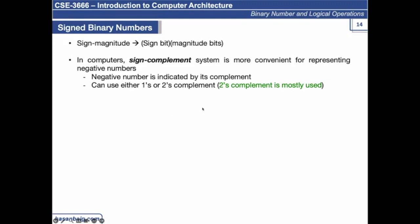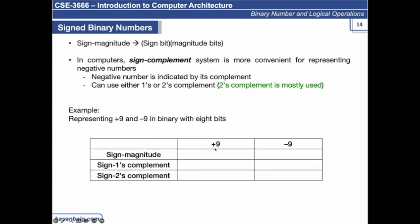So in computer sign complement system is more convenient for representing negative numbers. Here negative number is indicated by its complement. We have already discussed this. Two's complement is mostly used. Let's do a quick recap here. So plus 9 and minus 9 in binary with 8 bits. Plus 9 is easy.